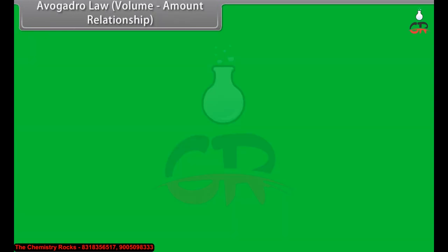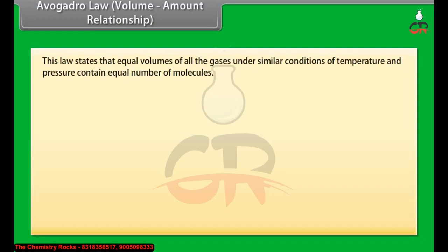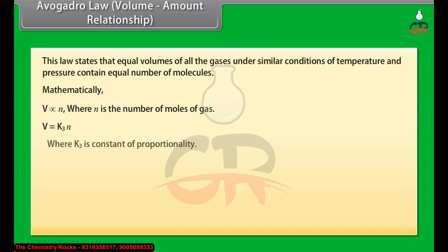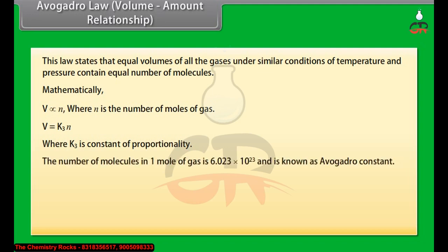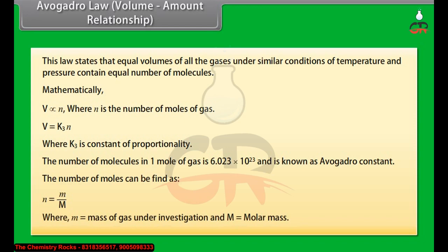Avogadro's Law (Volume-Amount Relationship): This law states that equal volumes of all gases under similar conditions of temperature and pressure contain equal number of molecules. Mathematically, volume is directly proportional to the number of moles of gas: V = K₃N, where K₃ is the constant of proportionality. The number of molecules in one mole of gas is 6.023 × 10²³, known as Avogadro's constant. The number of moles is defined as N = m/M, where m is the mass of the gas and M is the molar mass.